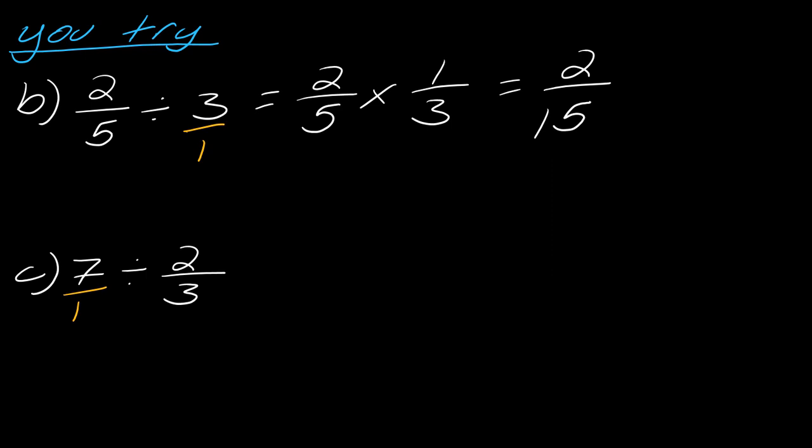Now, for C, 7 over 1 times 3 over 2. There, now I've got it all right. Okay. So, now if I multiply straight across, this becomes 21 over 2.